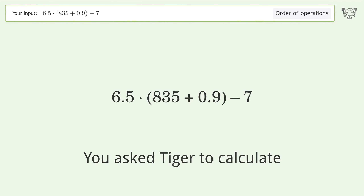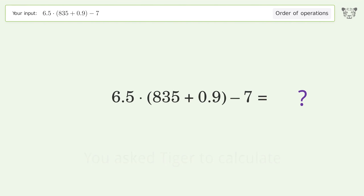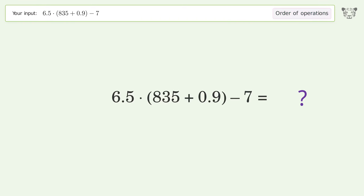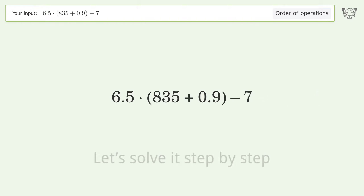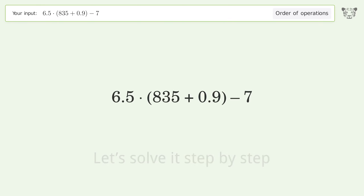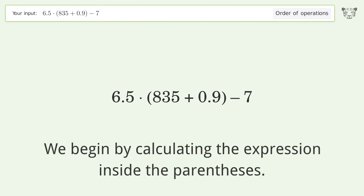You asked Tiger to calculate. This deals with the order of operations. The final result is 5426.35. Let's solve it step by step.